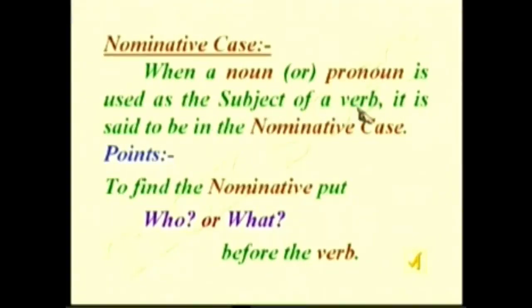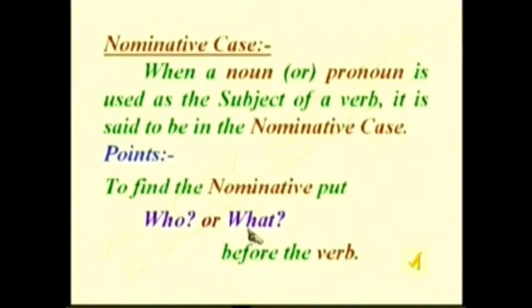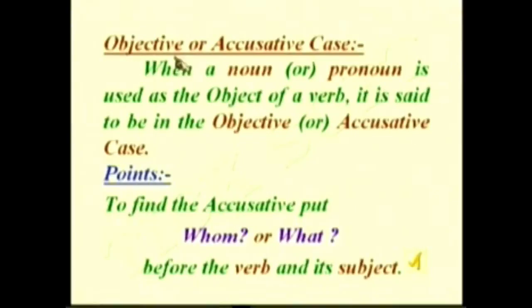Nominative case: when a noun or pronoun is used as the subject of a verb, it is said to be in the nominative case. To find the nominative, put two questions — 'who' and 'what' — before the verb.